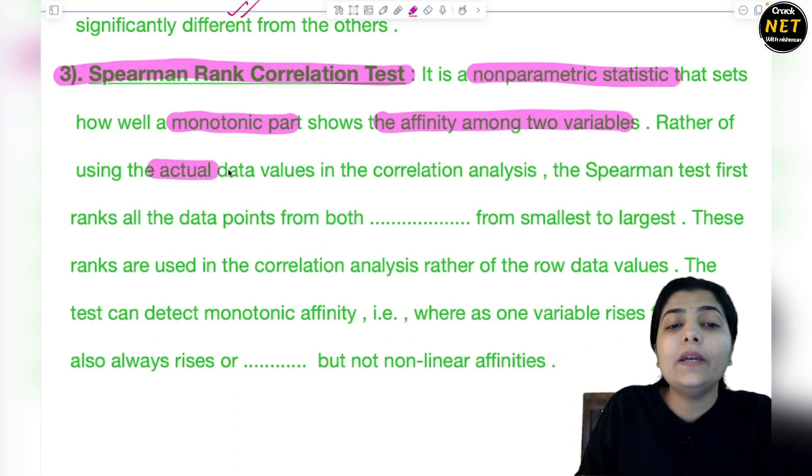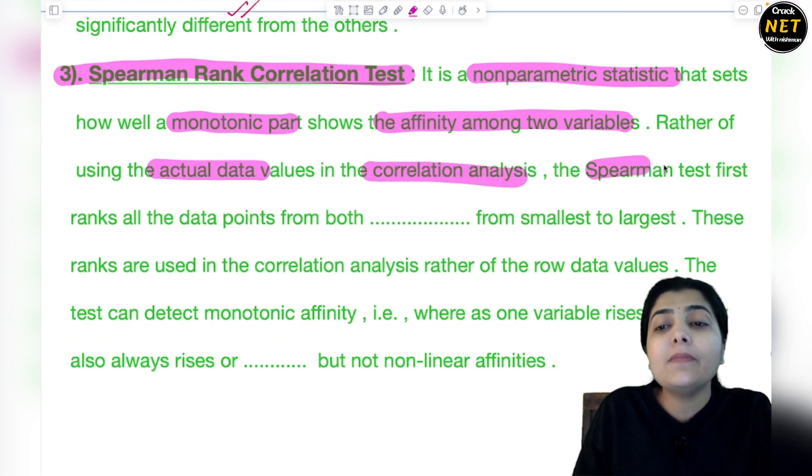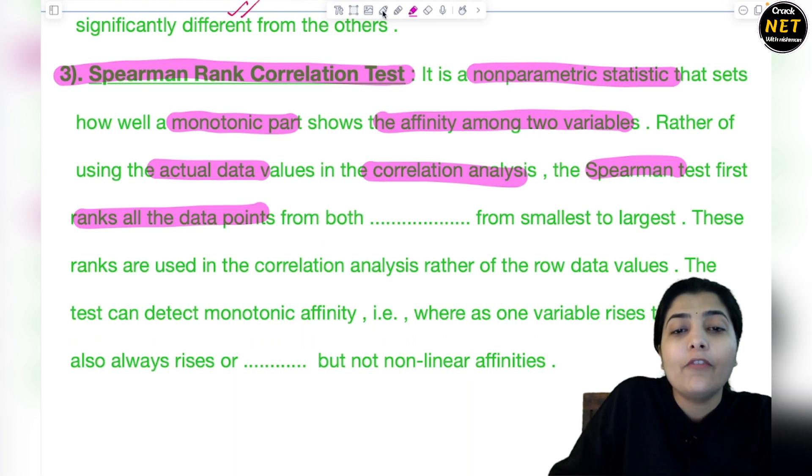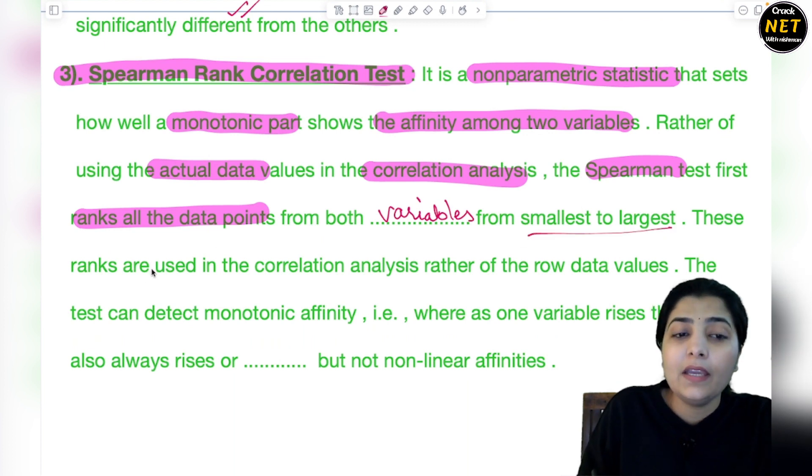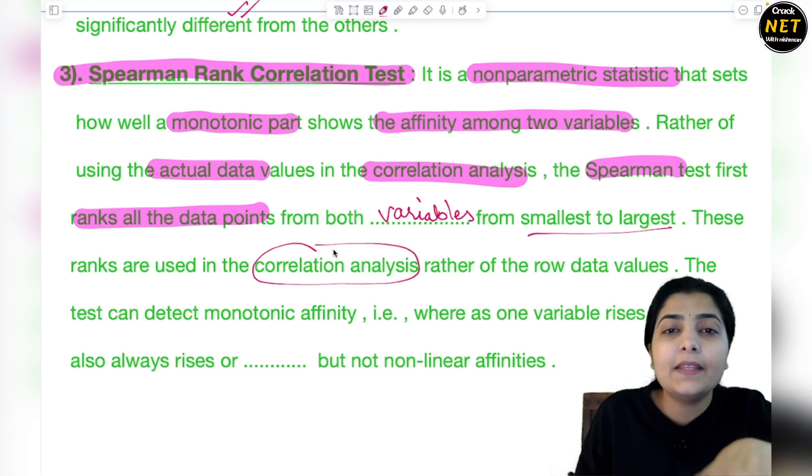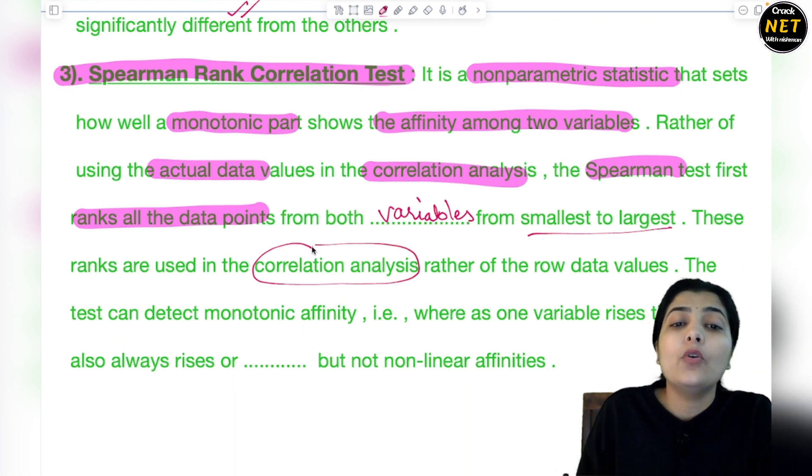Rather than using the actual data values in the correlation analysis, Spearman test first ranks all the data points from both variables from smallest to largest. These ranks are then used in the correlation analysis. We've covered correlation very well before. Go to that session video on correlation and regression where I've explained very well how correlation is calculated.